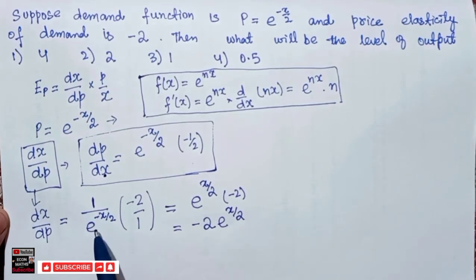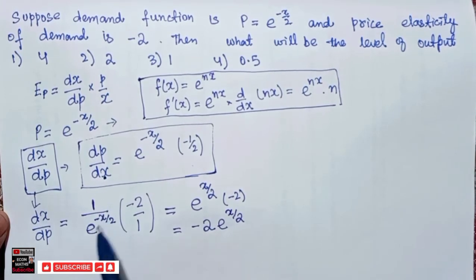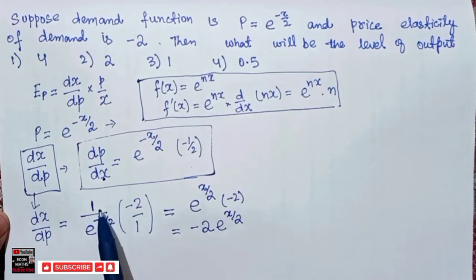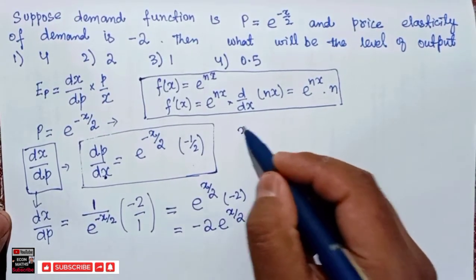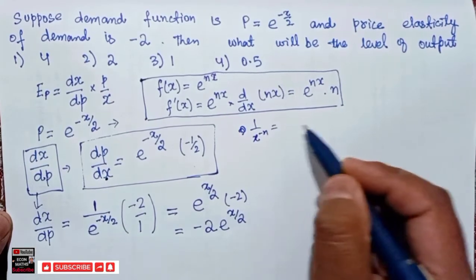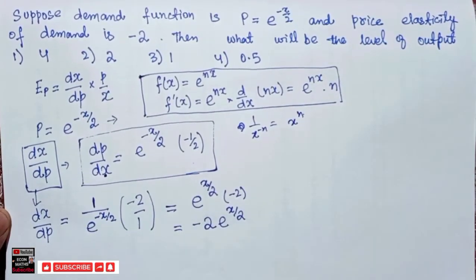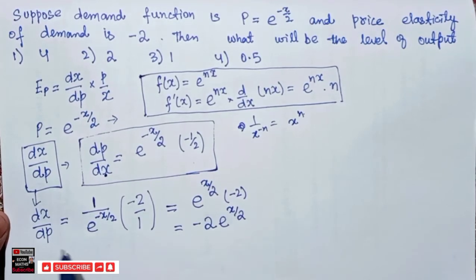We obtained e to the power positive x divided by 2 by transposing the denominator to the numerator — the exponent becomes positive. The rule is: 1 divided by x to the power minus n becomes x to the power plus n when moved to the numerator. So we now have dx divided by dp equal to minus 2 e to the power x divided by 2.